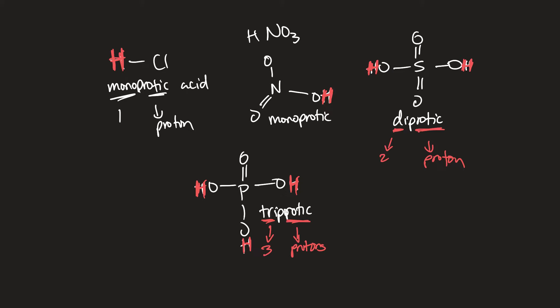An important thing to note: for a hydrogen to be considered an acidic hydrogen — one that gets donated as a proton — it must be bonded to a highly electronegative atom. In HCl, hydrogen is bonded to electronegative chlorine. In nitric and sulfuric acids, hydrogens are bonded to electronegative oxygens. This is what makes those hydrogens more likely to be donated.